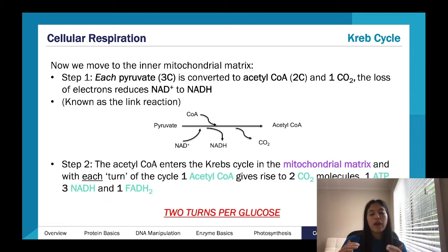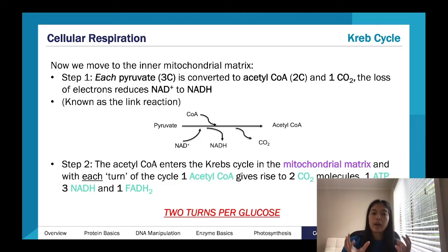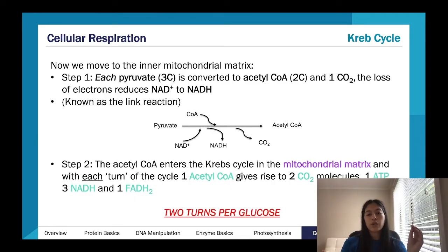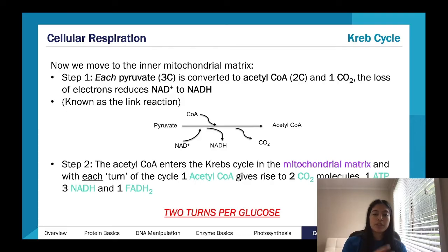Going into the Krebs cycle, there's an intermediate reaction first — converting pyruvate into acetyl-CoA. This isn't the cycle yet. Pyruvate is our three-carbon molecule and we convert it into acetyl-CoA, which is a two-carbon molecule. The other carbon becomes CO2, which is a product of cellular respiration — so one CO2 molecule comes from that conversion. We also get a bit of NADH from this step.